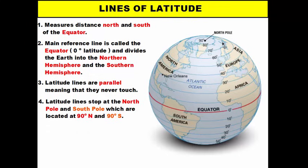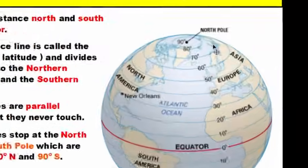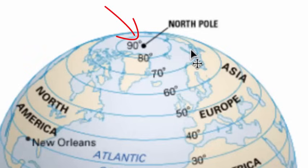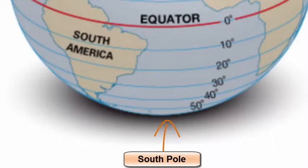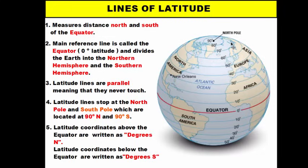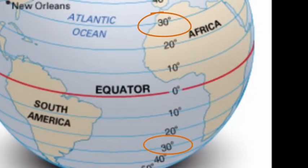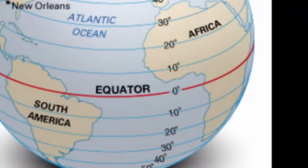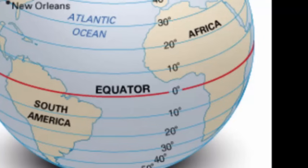Latitude lines stop at the poles — the north pole and the south pole. The highest latitude you can reach is 90 degrees. In the northern hemisphere that's 90 degrees north at the north pole, and 90 degrees south at the south pole. There is no latitude coordinate higher than 90 degrees. When giving your latitude coordinate, you must always designate whether you are north or south of the equator — for example, 30 degrees north or 30 degrees south.